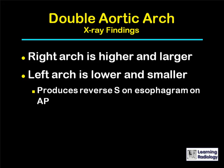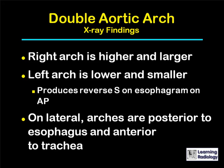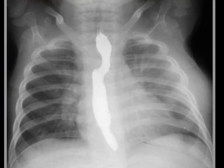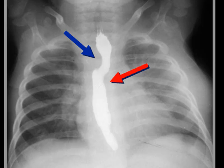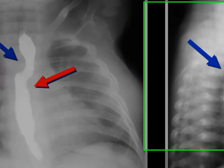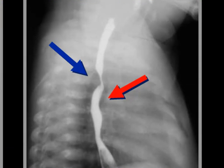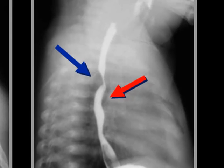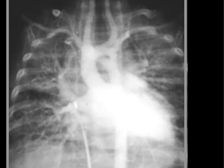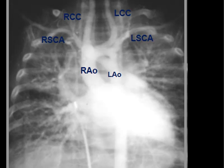On the lateral view, the arches are posterior to the esophagus and anterior to the trachea. This is an example of a double aortic arch in a pediatric patient. You can see the larger right impression, higher than the smaller left impression, produced by the two arches on the frontal view. On the lateral view there is a posterior impression followed by an anterior impression, shown by the red arrow. The double aortic arch has a characteristic angiogram showing the branching as indicated.